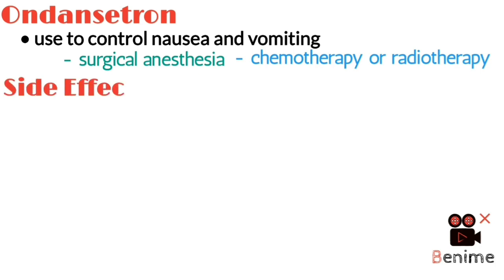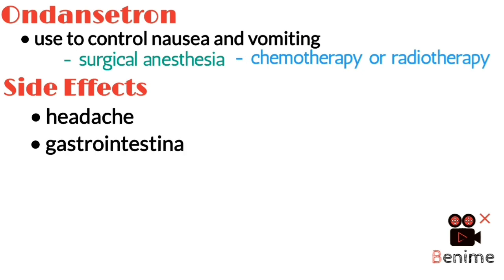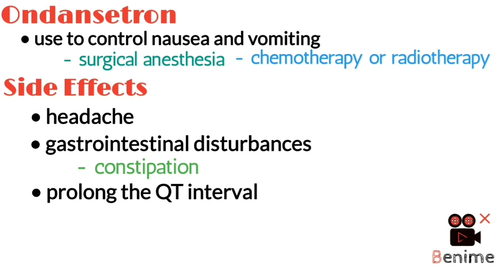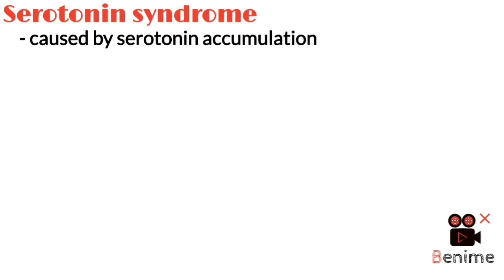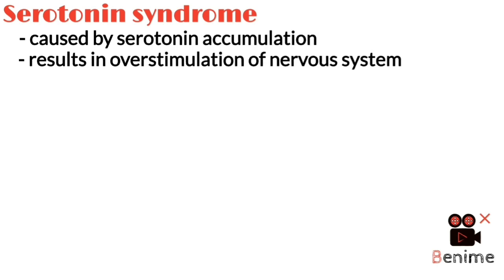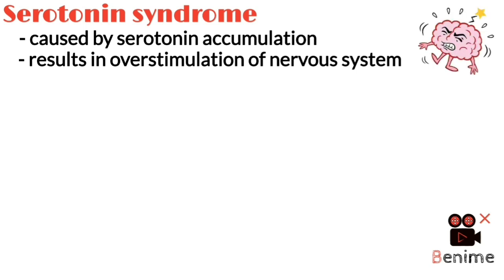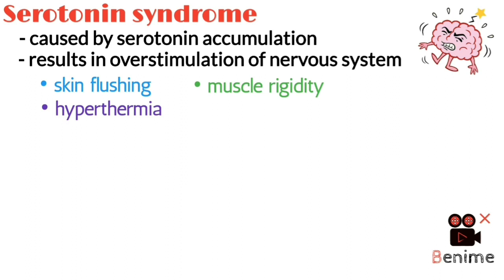Moving on to side effects, ondansetron can cause headaches and gastrointestinal disturbances like constipation, and can prolong the QT interval leading to arrhythmias. A life-threatening side effect of ondansetron is serotonin syndrome, which is caused by serotonin accumulation that results in overstimulation of the nervous system. This syndrome is characterized by skin flushing, muscle rigidity, hyperthermia, agitation, seizure and coma.